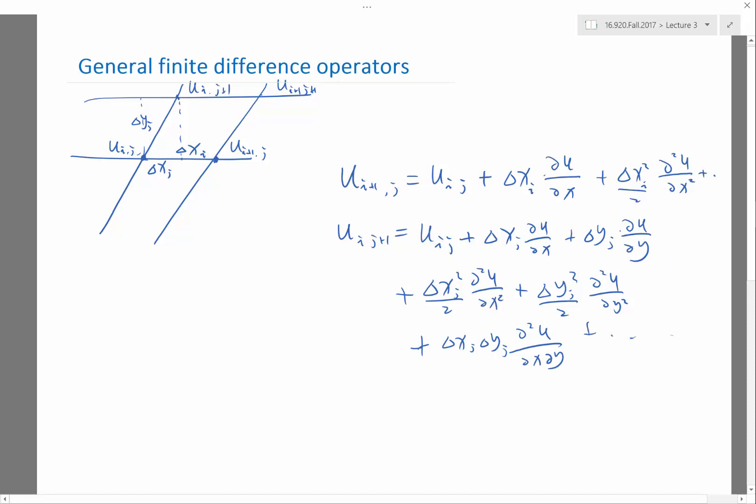And this works even if, well, if for example if the horizontal lines are not exactly aligned with the X axis, then you need to do the same thing for U I plus one J. It'll also be like that. And then what's next is if you want to approximate a certain derivative.